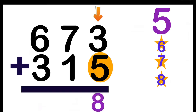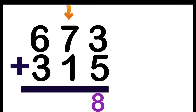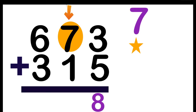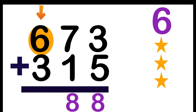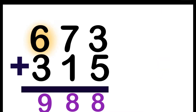Let's proceed to the 10's place. 7 plus 1 — look at the big number, digit 7. 7 on your mind: 7, 8. So, 7 plus 1 is equal to 8. Let's proceed to the 100's place. 6 plus 3 — big number, 6 on your mind: 6, 7, 8, 9. So, 6 plus 3 is equal to 9. The sum of 673 and 315 is 988.